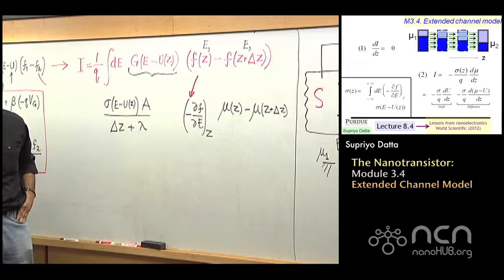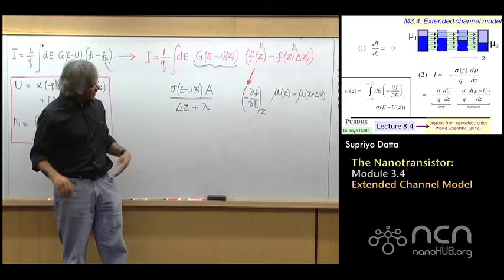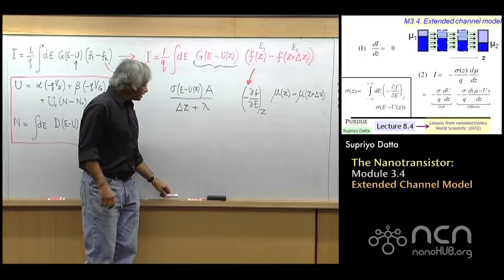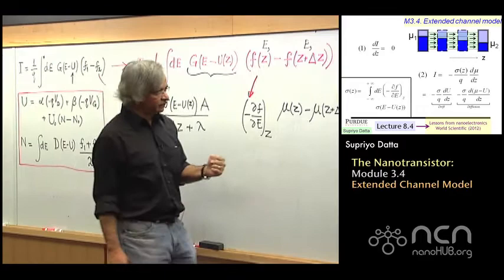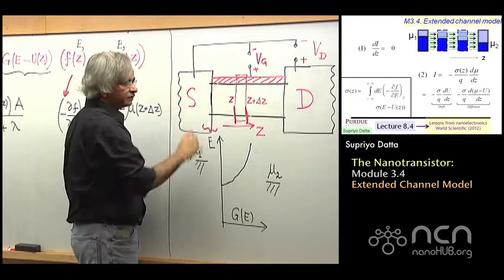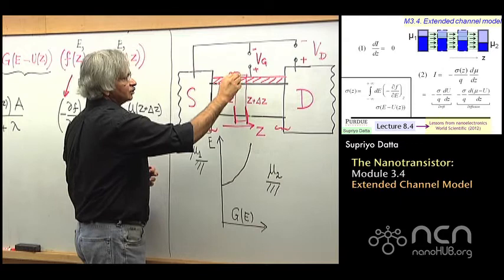This is where there is something subtle involved. One of the points I explained earlier is that this extra resistance you see in the new Ohm's law is really associated with the interfaces. So what that means is when you are trying to write the conductance of a section like this, we should not really include the interface resistance, because we have an interface resistance where a narrow region suddenly becomes wide — but there is really no interface inside the channel.